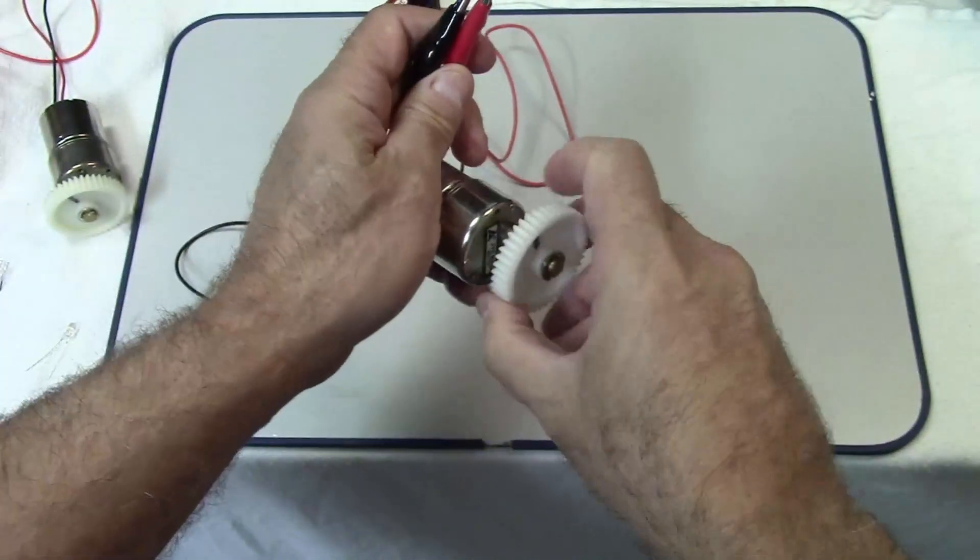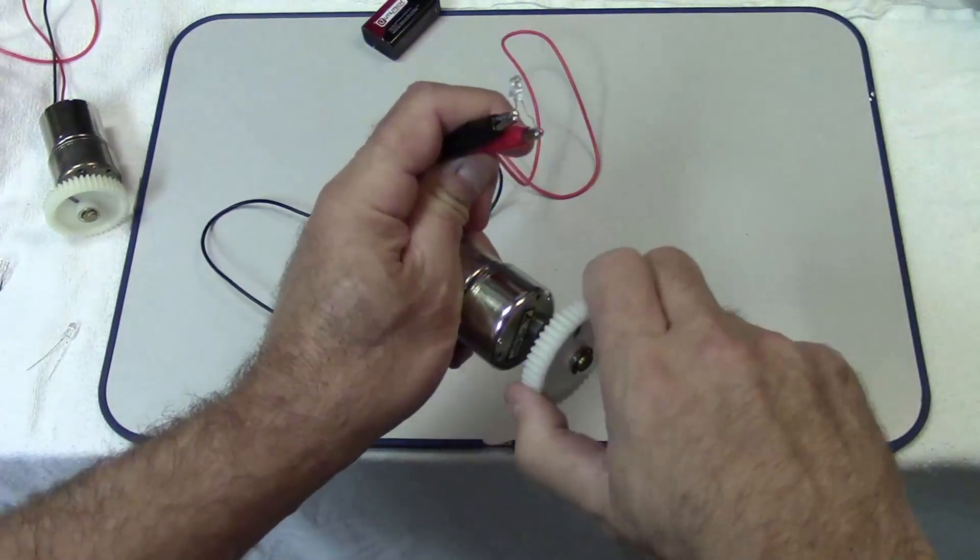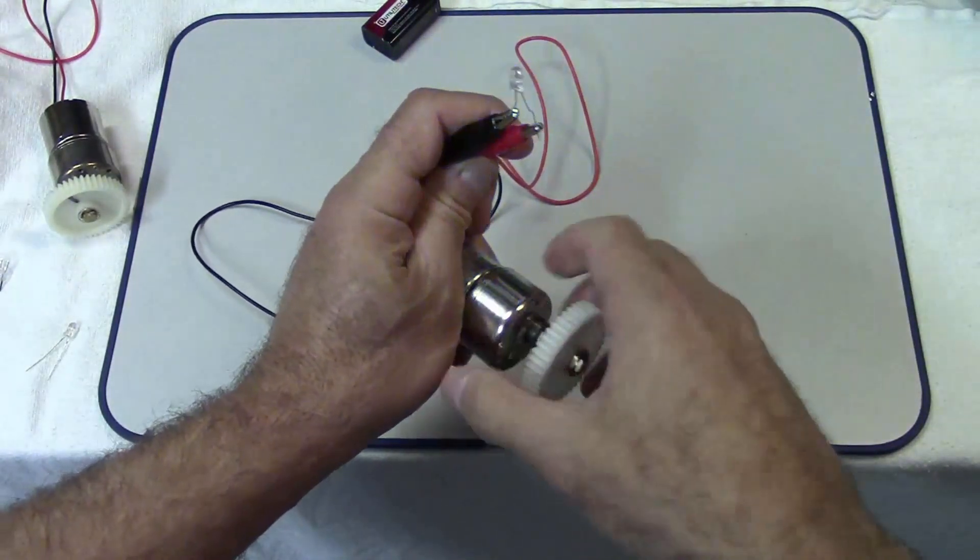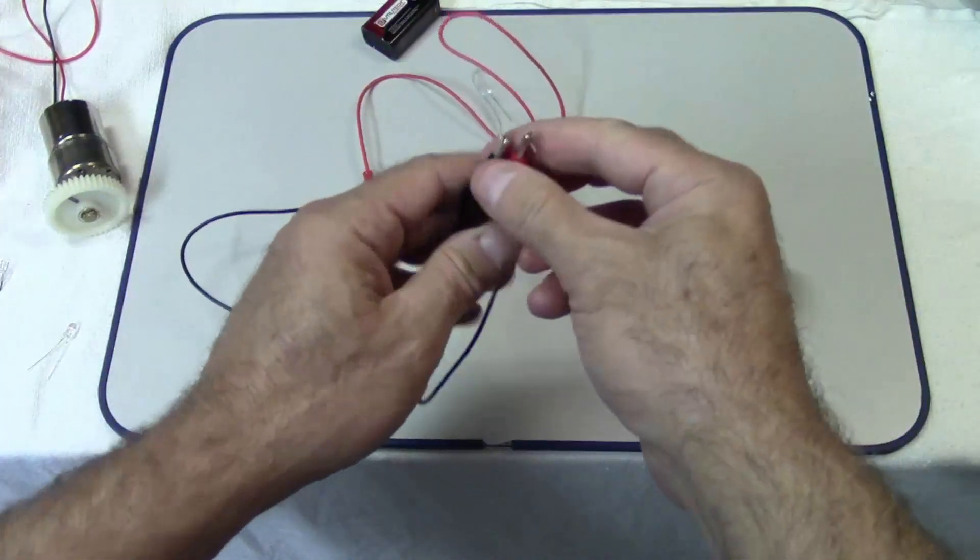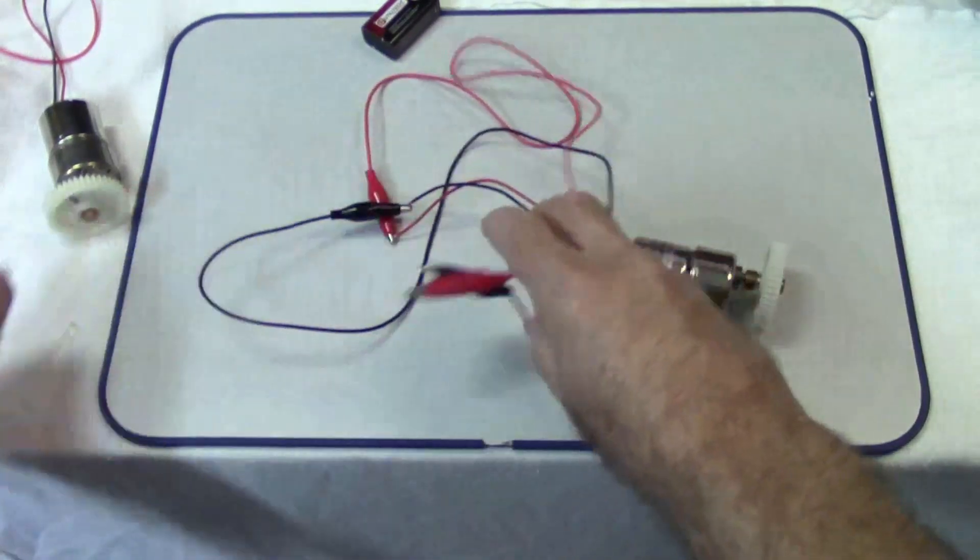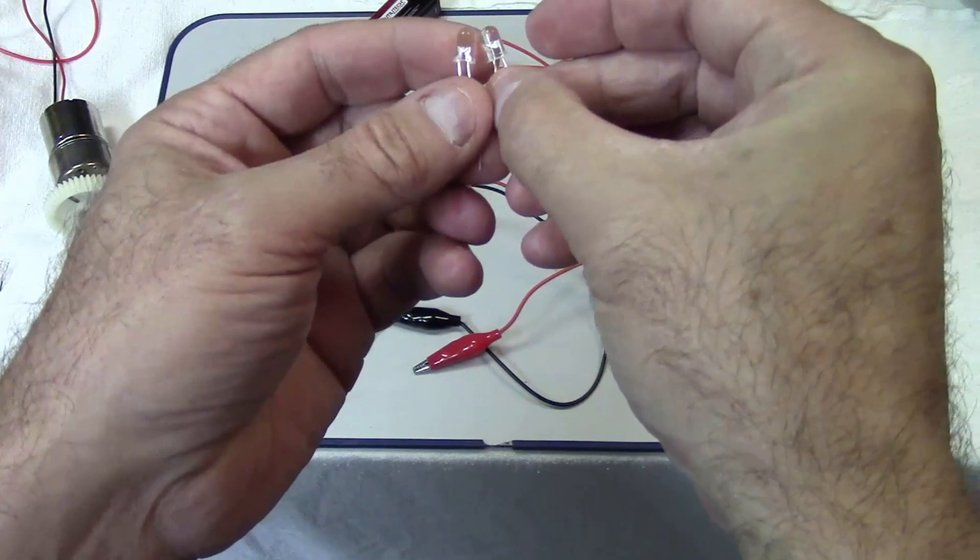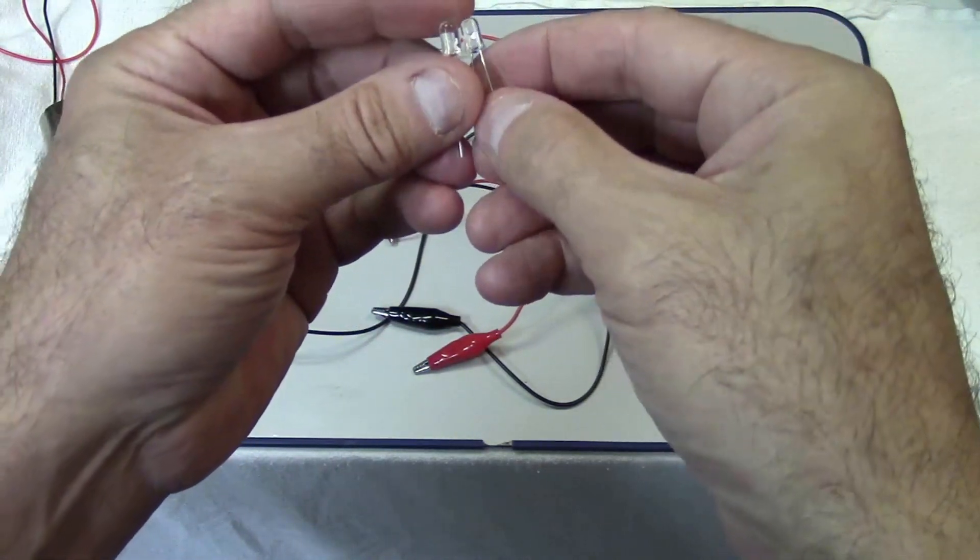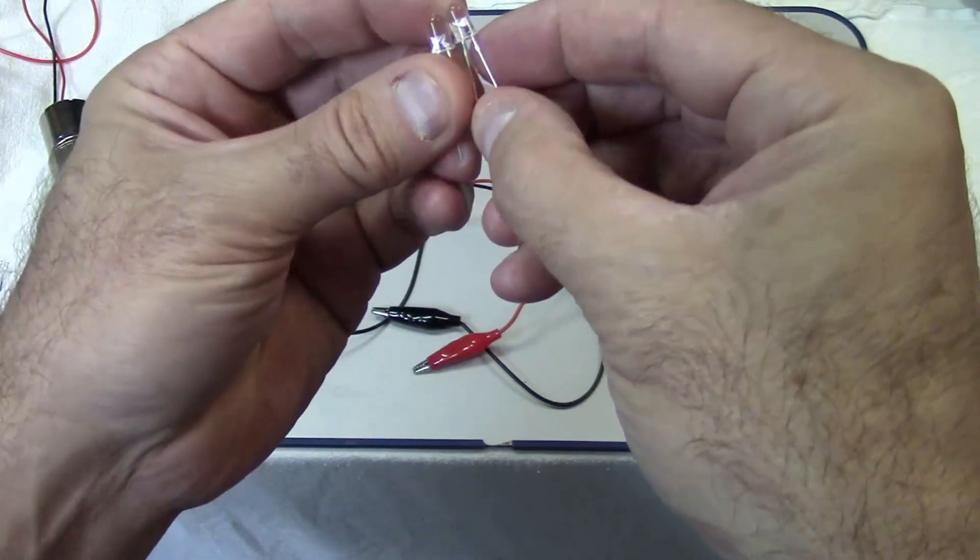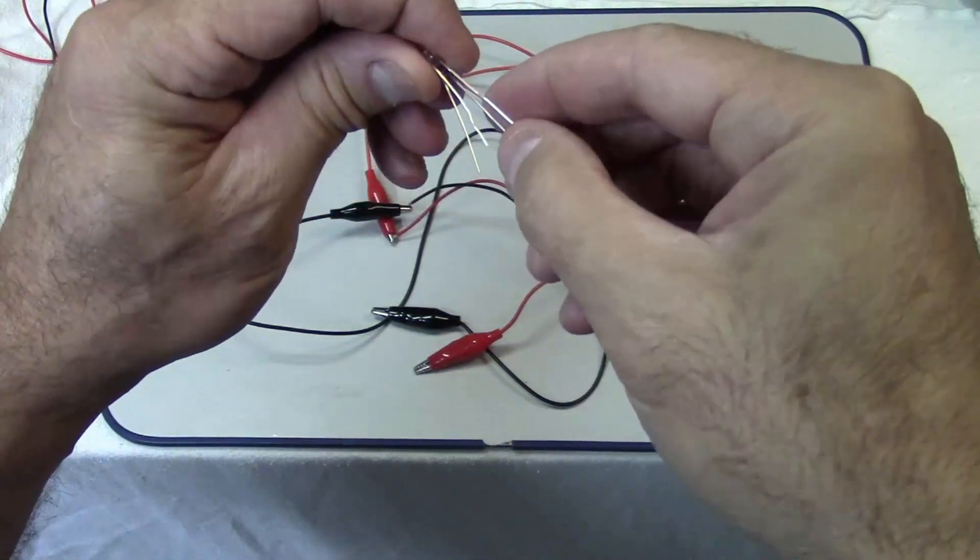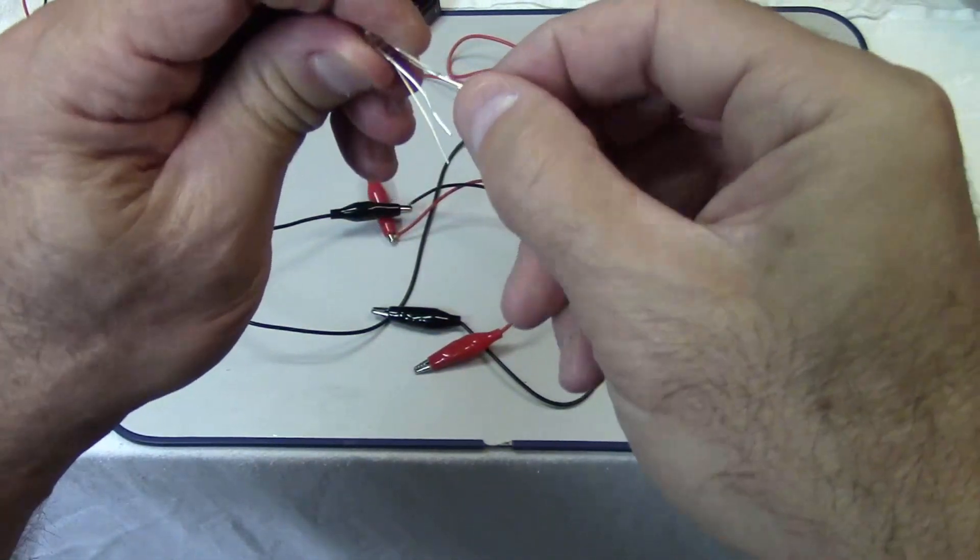Now I'm going to take another LED and this is a red LED. I'm going to hook the anode of one LED to the cathode of the other LED.